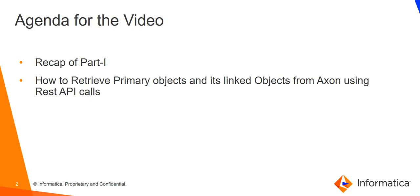In this video we will take the example of: I know one of my process names and I want to see what systems as well as glossaries are linked with that particular process. If you want to explore other variations of this REST API call, please refer to the Axon REST API Guide version 5.4, which you can find on the KB portal and download for your reference.